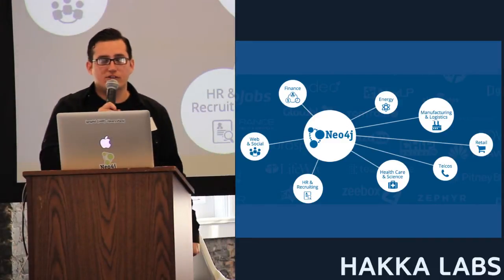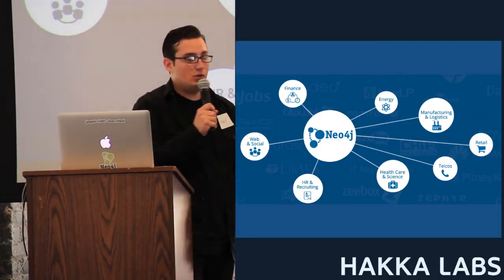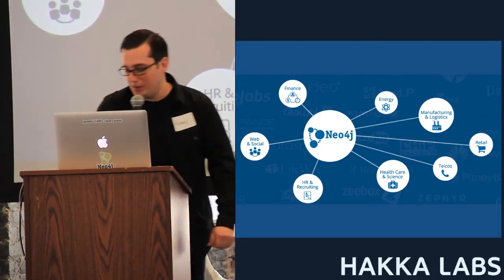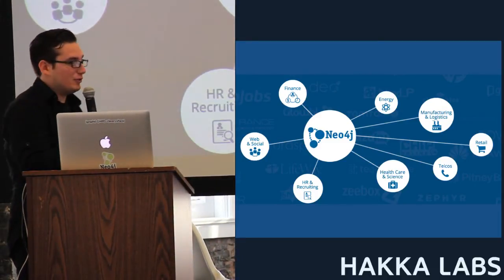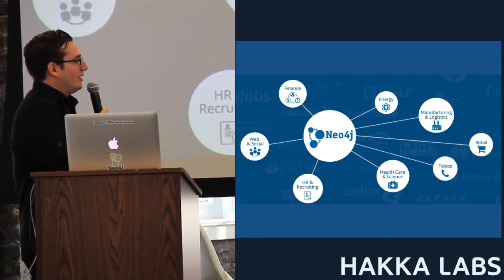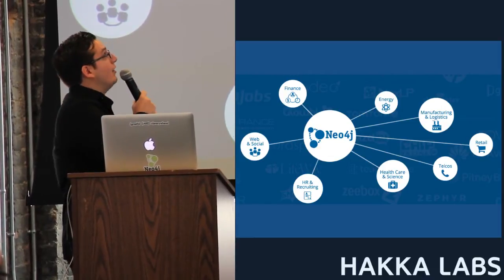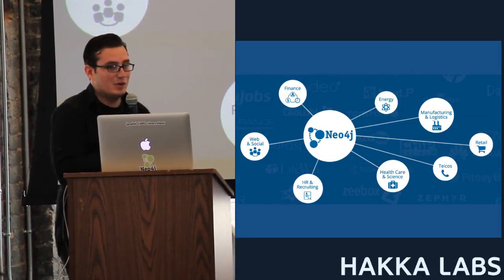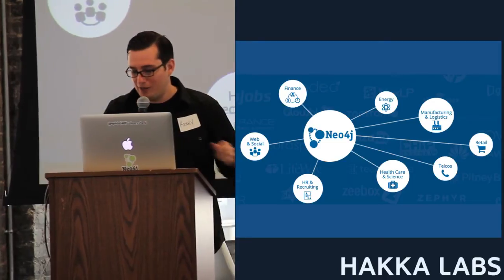Neo4j is a graph database used in many different domains and industries. Just a few examples: HR and recruiting, healthcare and science, telcos, manufacturing and logistics, energy, finance, and — of course, the most important one — web and social.